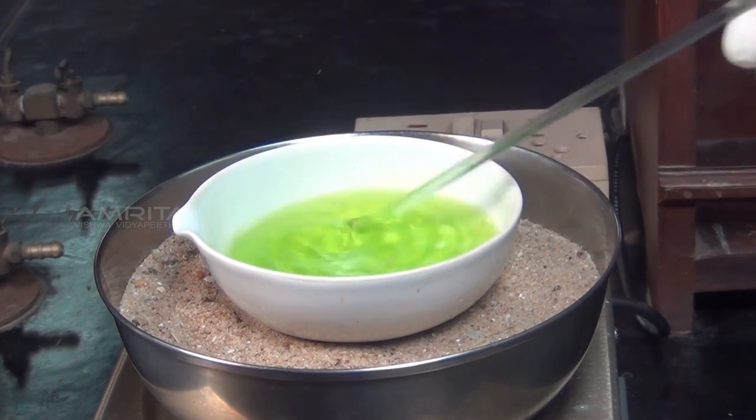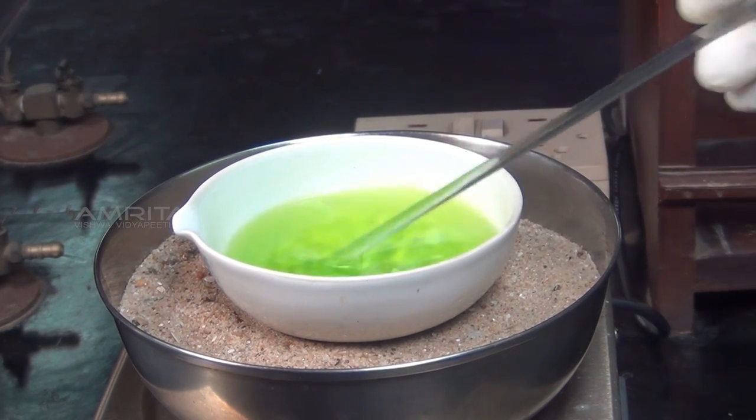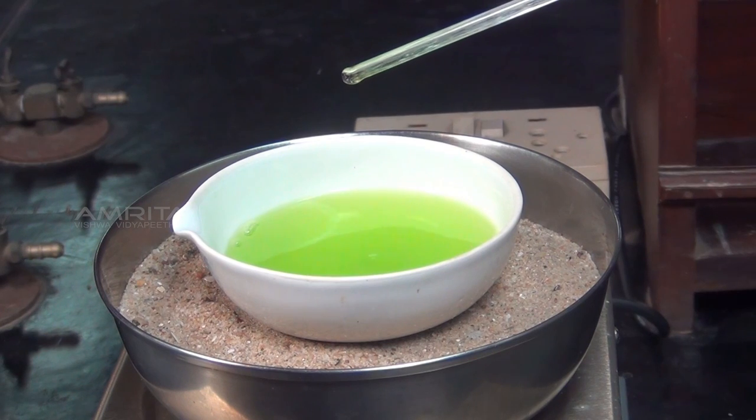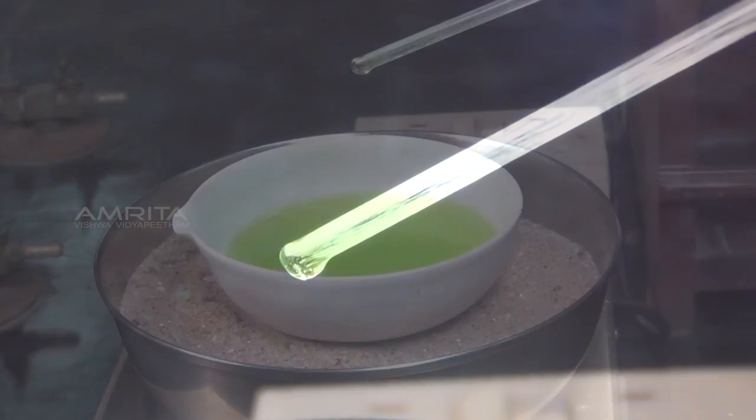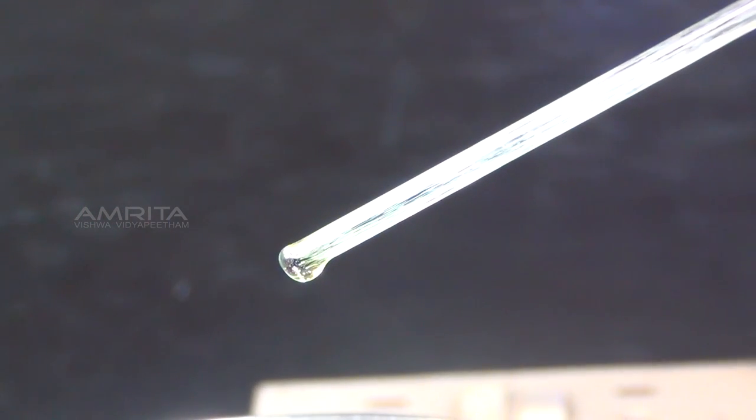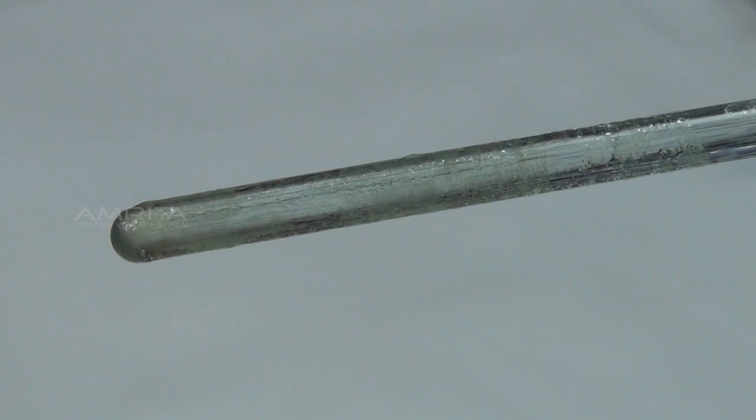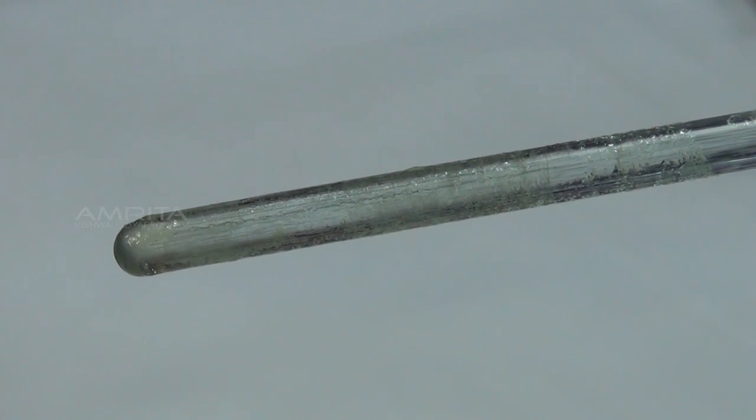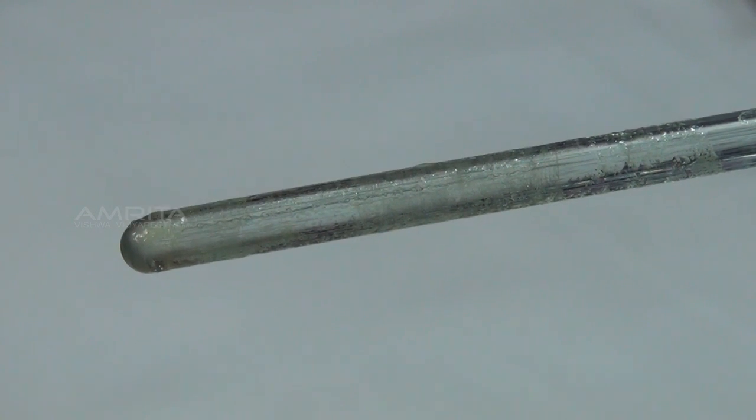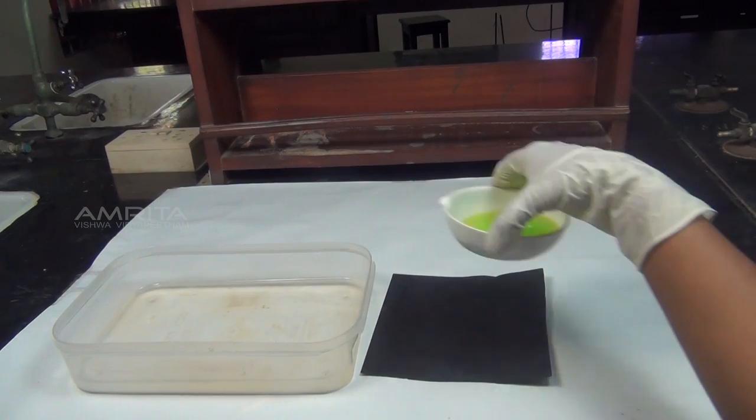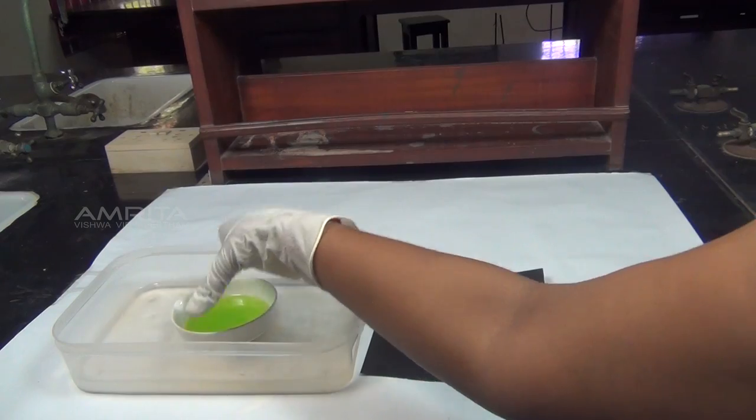When the volume of the solution is reduced to about one half of its original volume, take out a drop of the concentrated solution at the end of the glass rod and cool it by blowing. Formation of thin crust indicates that crystallization point has been reached. Now place the china dish in a trough containing cold water.